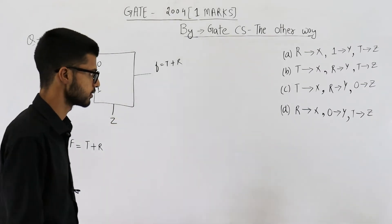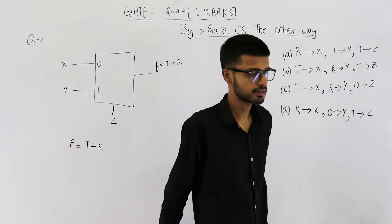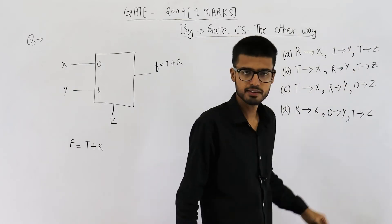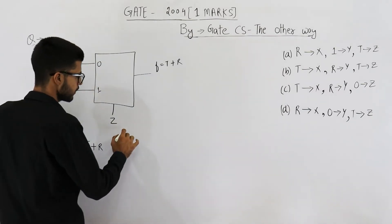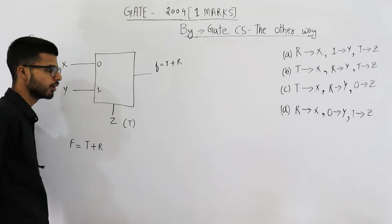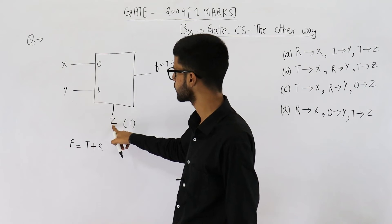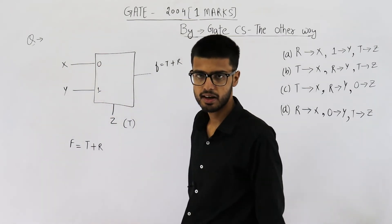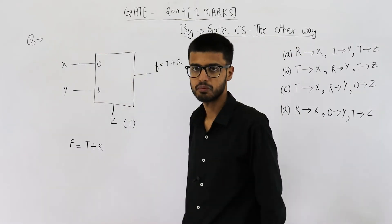These are the four options. From here you can see the value of z, that is the select line, can be t or 0. These are the only two possible values according to the options. So it is kind of certain that z is going to be t only, because we cannot fix z to 0 — if z is always 0, this input will always be selected, making no use of the multiplexer.